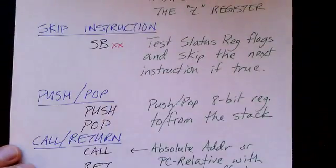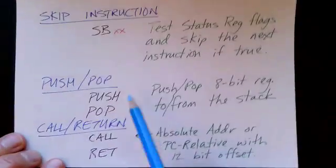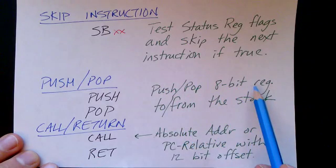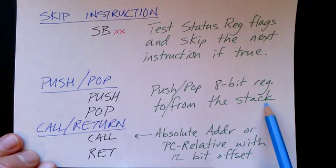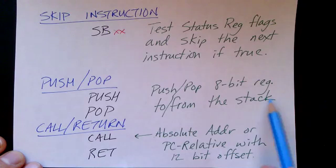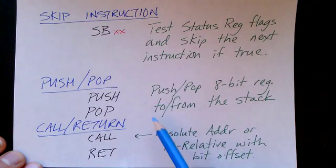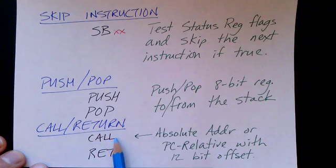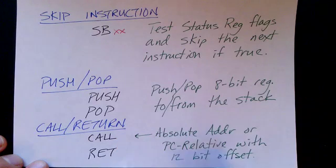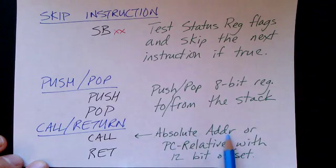We also have push and pop instructions in the architecture. Since this is an 8-bit processor, we are pushing and popping 8-bit registers to or from the stack. The stack pointer is a register that points to static RAM. We also have call and return — the call instruction pushes the return address onto the stack and then jumps. The target of the call can be specified with an absolute address or a program-counter-relative address.